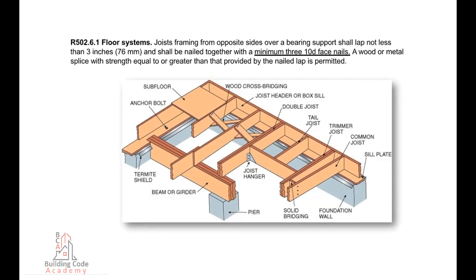R-502.6.1, Floor Systems. Joists framing from opposite sides over a bearing support shall lap not less than 3 inches (76 millimeters) and shall be nailed together with a minimum 3, 10-D face nails. A wood or metal splice with strength equal to or greater than that provided by the nailed lap is permitted.